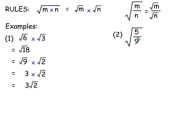Here's root of 5 ninths. Using the quotient rule, you can split the root over the top and bottom to get root 5 over root 9. Root 9 is exactly 3. So when a number's not a surd like root 9, you can write down its exact value.